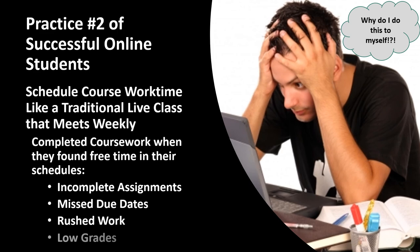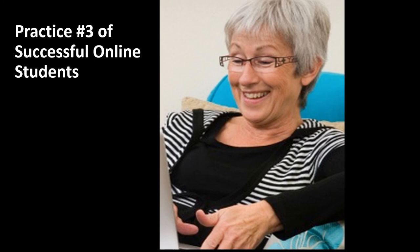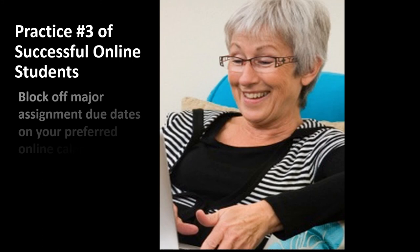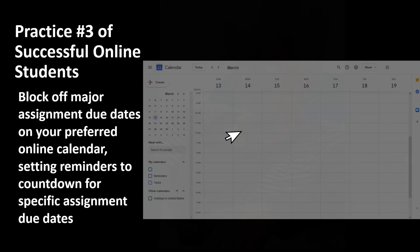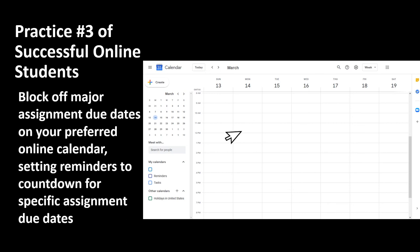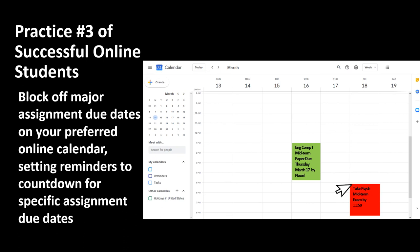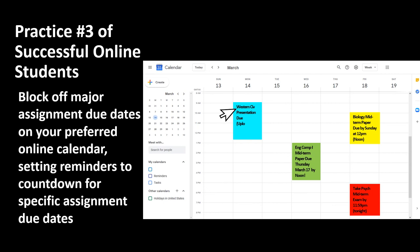Best practice number three of successful online students: Block off major assignment due dates on your preferred online calendar, setting reminders to count down for specific assignment due dates. My most successful students would take the course syllabus and build all assignment due dates into their preferred online calendar. They also set reminders for major assignments that represented major percentages of their final grade, such as midterm papers, midterm exams, presentation due dates, final examinations, and extra credit assignments. They would build in early alert reminders with a four-week, three-week, two-week, and one-week countdown reminder, with some students progressing to a daily reminder for the final week until submitting the assignment.